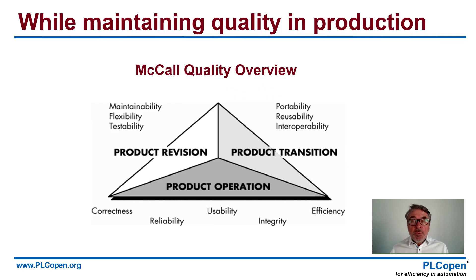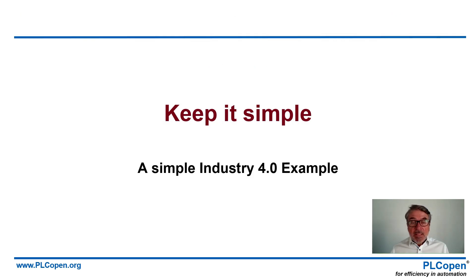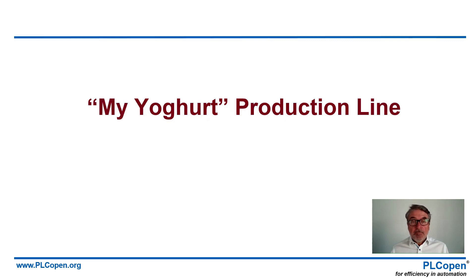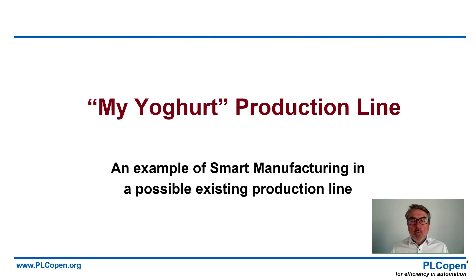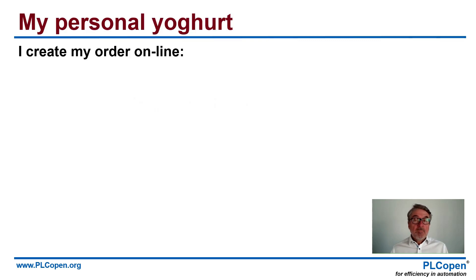Of course, you want to maintain your quality that you're used to, although you do mass customization. And this example is about that. This is a simple example for Industry 4.0 — I call it the MyYoghurt production line. What we create is a mass customized product, MyYoghurt, on an existing production line.